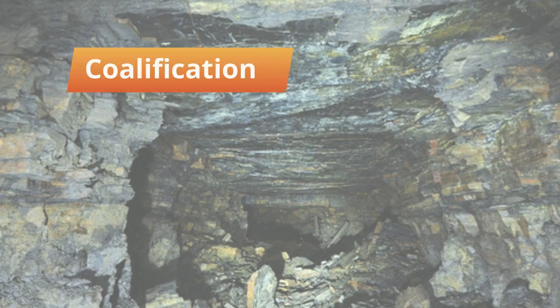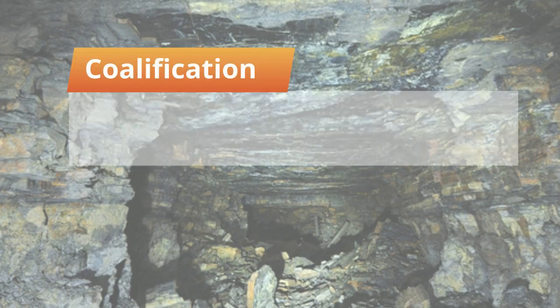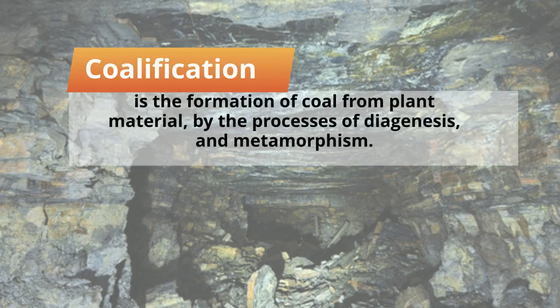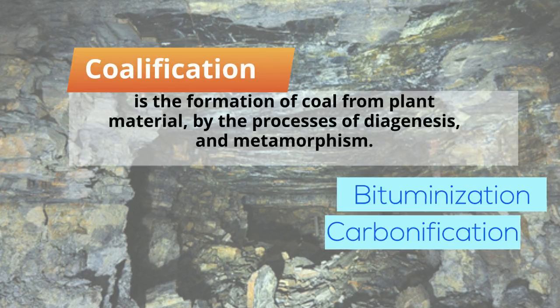The energy in coal initially comes from the sun, and is energy from sunlight trapped by dead plants. Coalification is the formation of coal from plant material by the processes of diagenesis and metamorphism. It is also known as bituminization or carbonification.